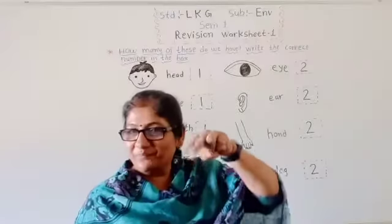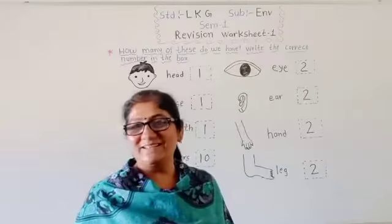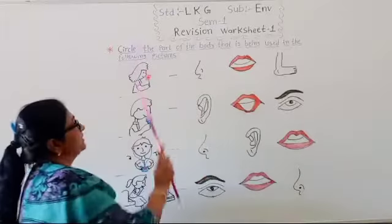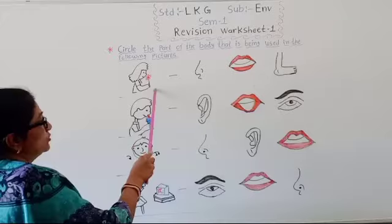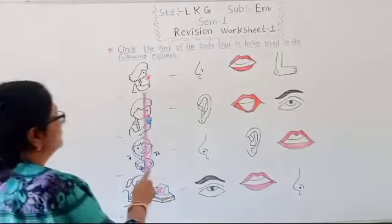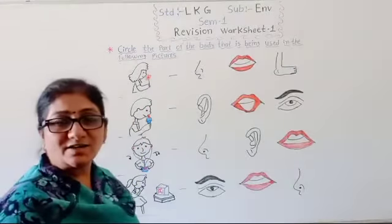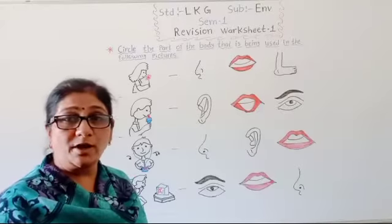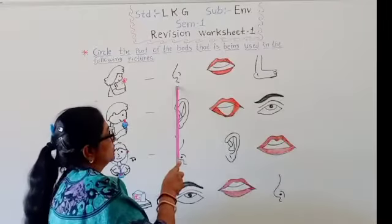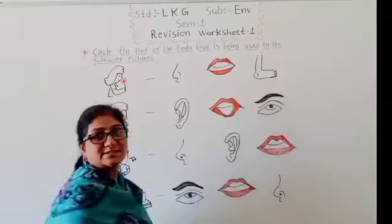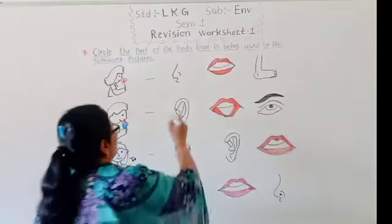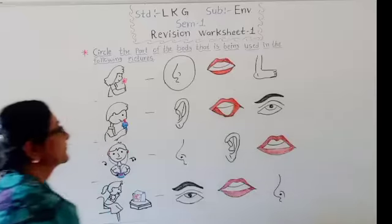Second topic: Circle the part of the body. For smell, which part of our body is used? Nose. Yes, we have to circle the nose.